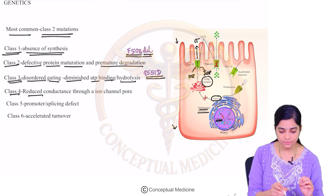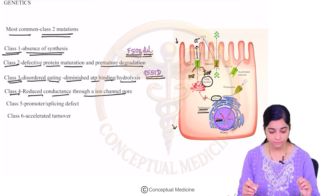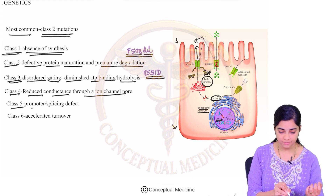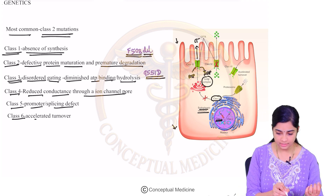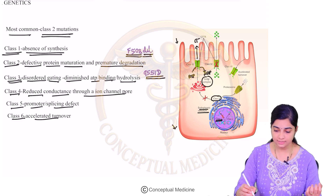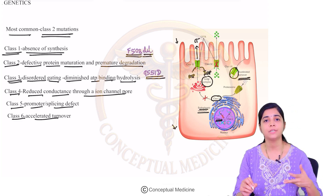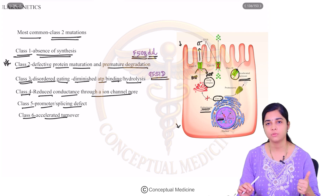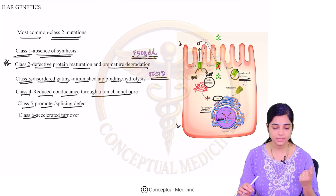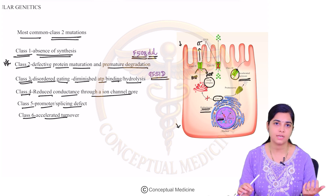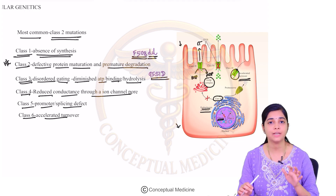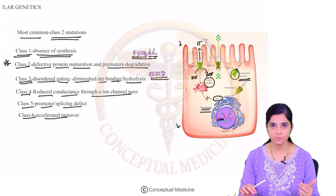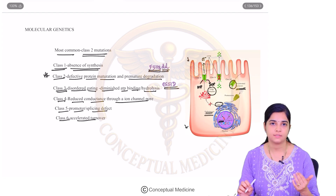In class 4, there is reduced conductance through the ion channel — the channel is present but not functioning properly. In class 5, there is a promoter or splicing defect. In class 6, there is accelerated turnover — ion channels are removed from the apical membrane too quickly. Remember: the most common is class 2 (F508 deletion); G551D is class 3. Targeted therapies address each of these specific mutations.